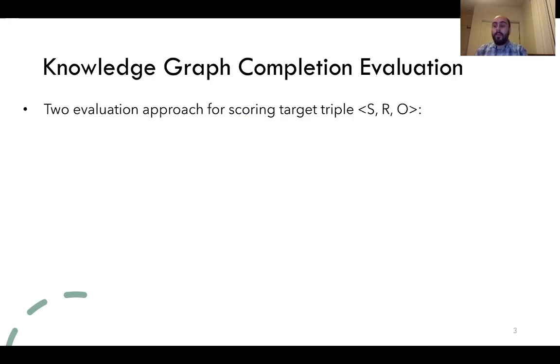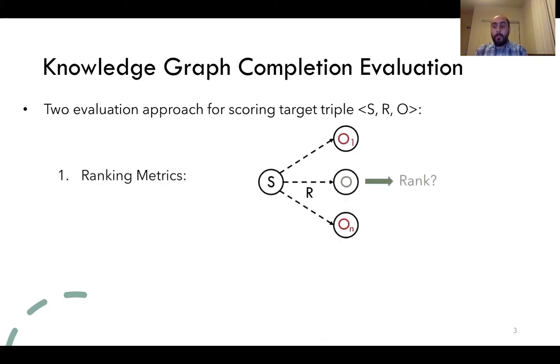There are two common evaluation methods for knowledge graph completion models. One, computing the ranking of target triple in comparison to all other possible triples, and two, learning a binary classification to identify triples as true or false.